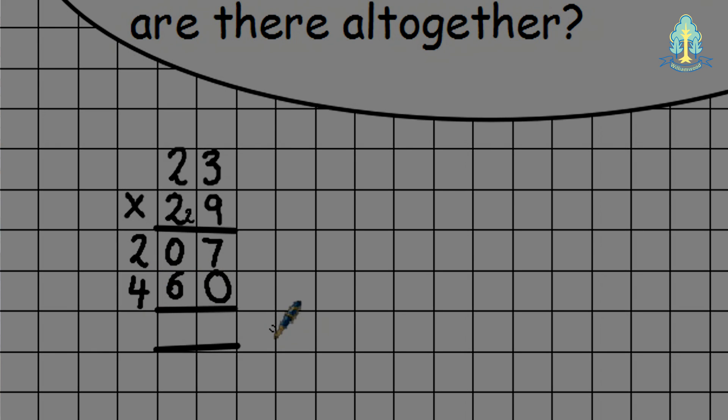We are now left to add these together. So 7 add 0 gives me 7. 0 add 6 gives me 6. And 2 add 4 gives me 6. Giving my answer is 667 chairs.